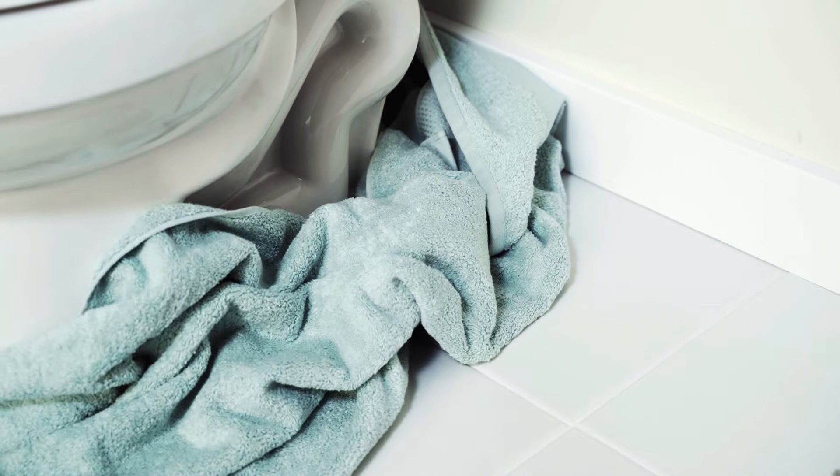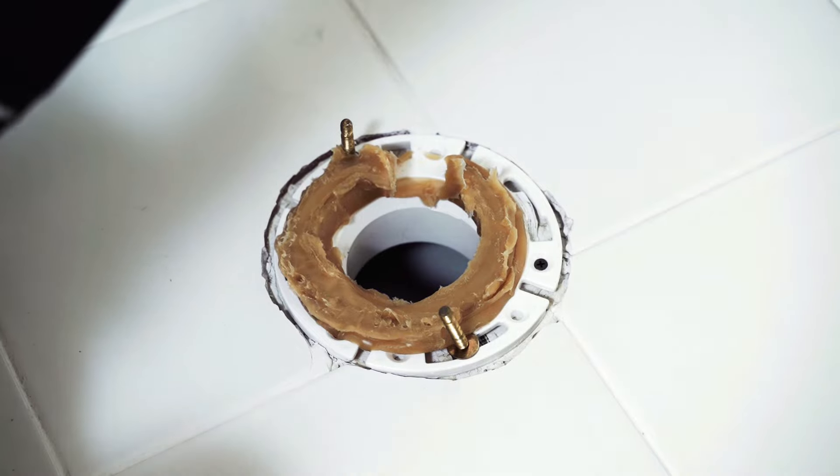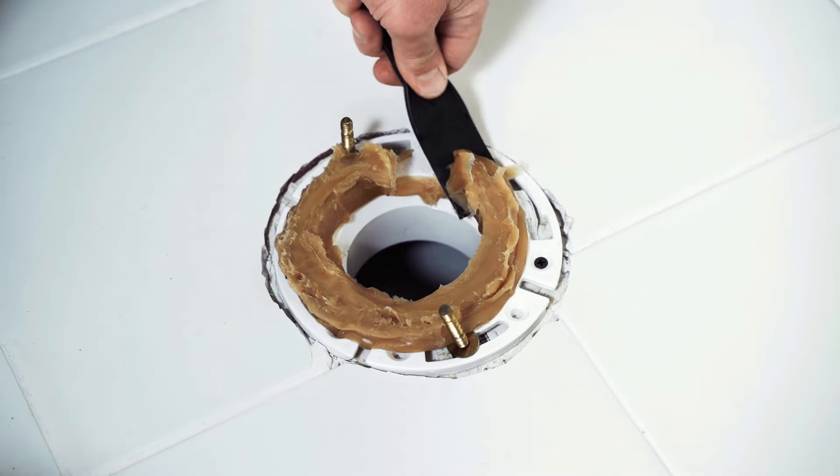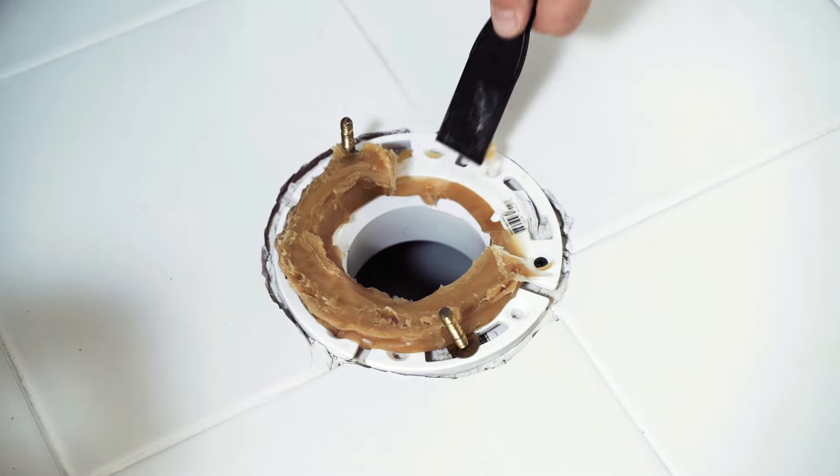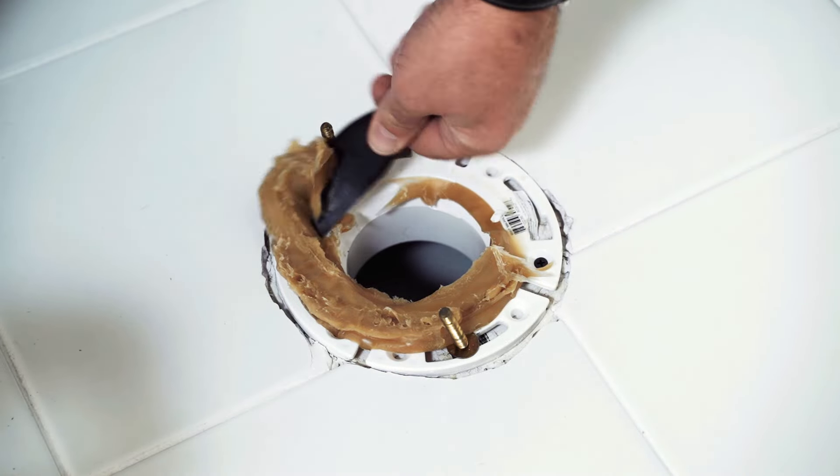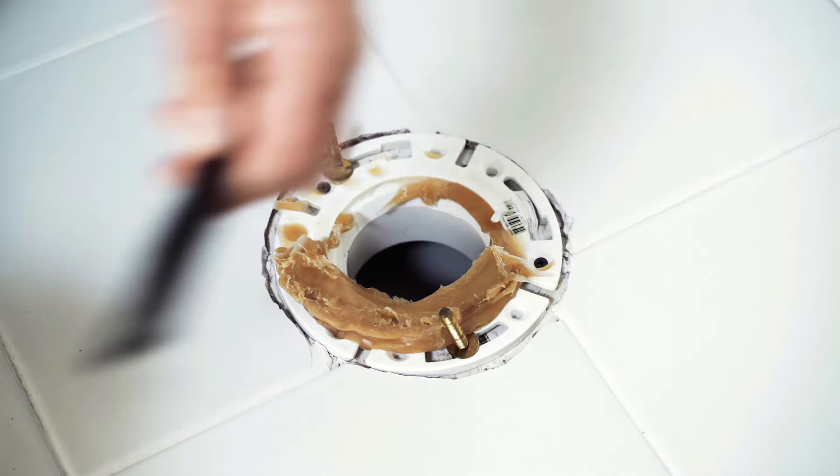At that point when you remove the toilet you may notice that there's wax residue from the old wax ring on what's called the toilet flange, that's the circle piece that those bolts are connected to at the floor level, and you will also need to remove any excess wax from the bottom of the toilet bowl itself.